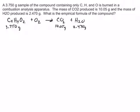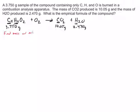If you look at the equation, all the carbon on the left goes into CO2, and all the hydrogen from the compound goes into H2O. So we can figure out the moles of carbon from CO2 and the moles of hydrogen from water, but oxygen we'll have to figure out a different way. So the first thing we're going to do is find the mass and moles of carbon.